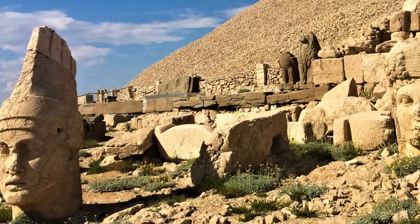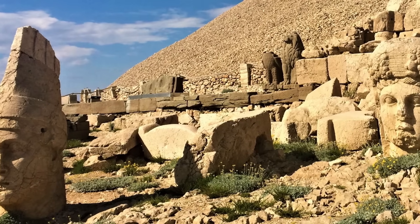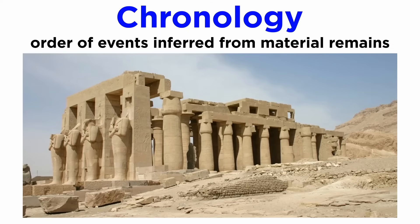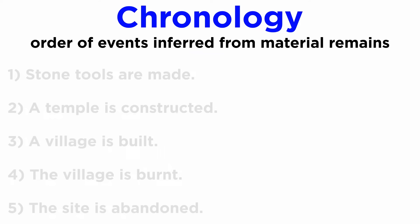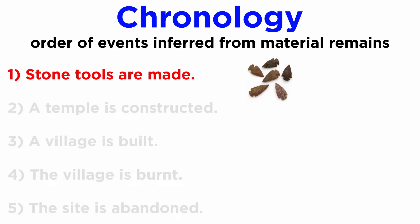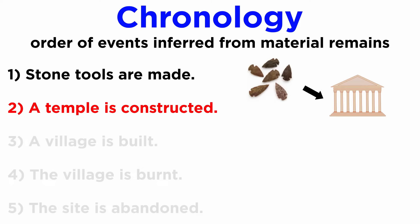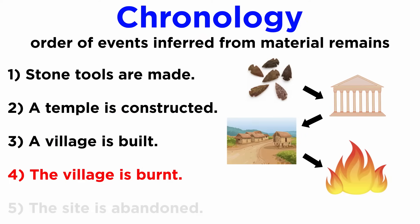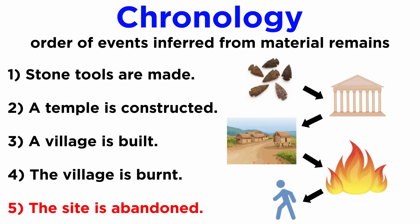Dating is used at archaeological sites to understand a site's chronology. Chronology is the order of events at a site that can be inferred by material remains found there. A basic chronology of a site might look something like this: stone tools are made, a temple is constructed, a village is built, the village is burnt, and the site is abandoned. Being able to date artifacts and features lets archaeologists place their construction before or after other events.